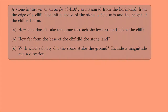A stone is thrown at an angle of 41 degrees, as measured from the horizontal, from the edge of a cliff. The initial speed of the stone is 60 meters per second and the height of the cliff is 155 meters. Part A: how long does it take the stone to reach the level ground below the cliff? Part B: how far from the base of the cliff did the stone land? And Part C: with what velocity did the stone strike the ground? Include a magnitude and a direction.